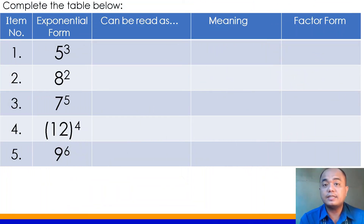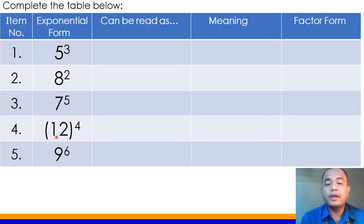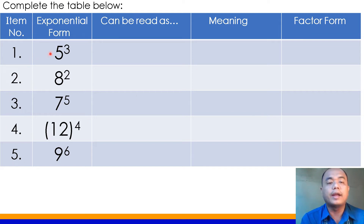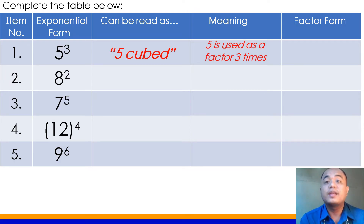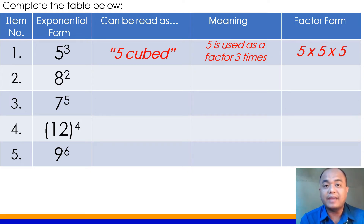Let's have this activity para mas maintindihan nyo ang tinatawag nating exponential notation. Let us complete this table. You are given the exponential form and all you have to do is give how it is read, its meaning, and its factor form. Number 1: that is read as 5 cubed. 5 cubed means 5 is used as factor 3 times — ang 5, limang beses... 5 times 5 times 5.